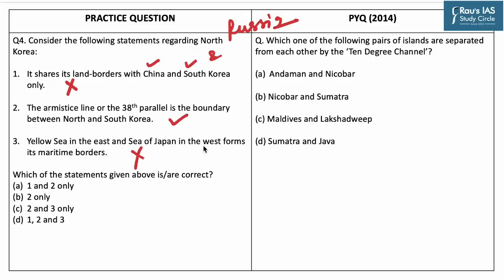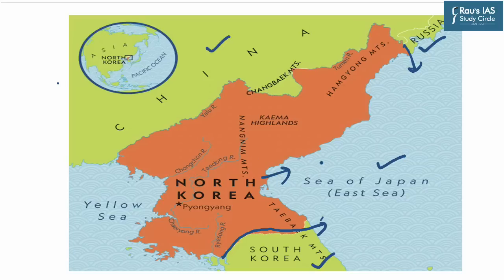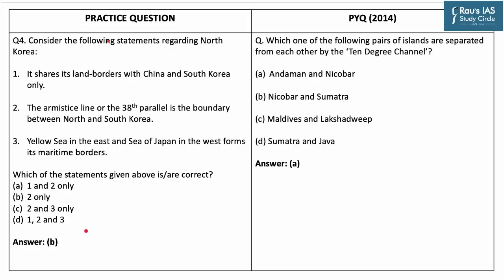As shown on the map, the Yellow Sea lies to the west of North Korea and the Sea of Japan lies to the east. North Korea shares land borders with China, South Korea, and Russia. The 38th parallel line is the boundary between North Korea and South Korea. Hence the correct answer is option B — statement 2 only. In 2014, UPSC asked a question on the 10-degree channel, the correct answer to which is option A.